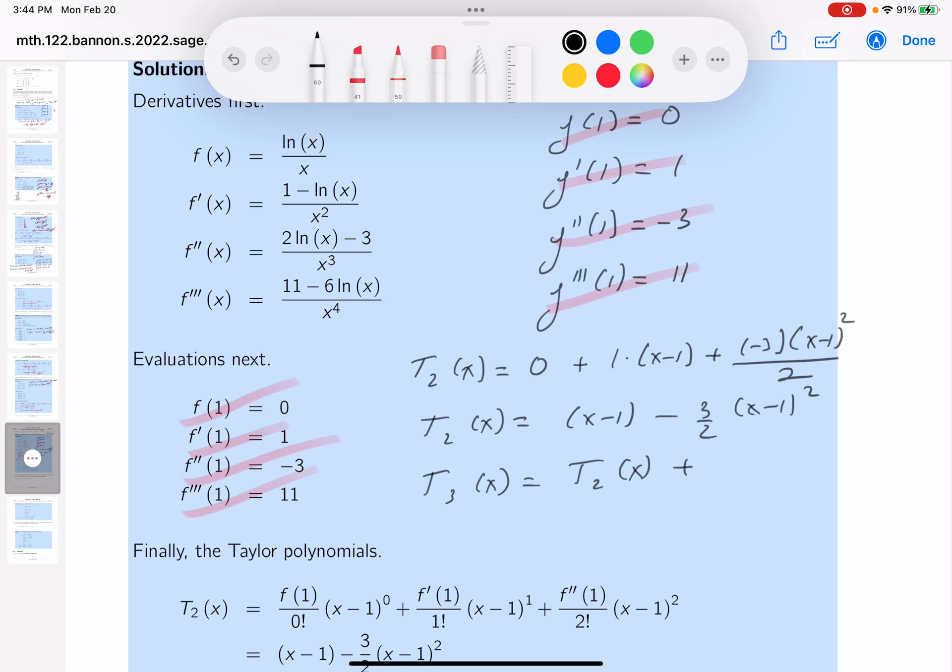I'm going to simply say it's T2 plus the next term up. And what's that going to be? 11 over 3 factorial, which is 6, and x minus 1 cubed. Let's get a red pen out and see how we did.